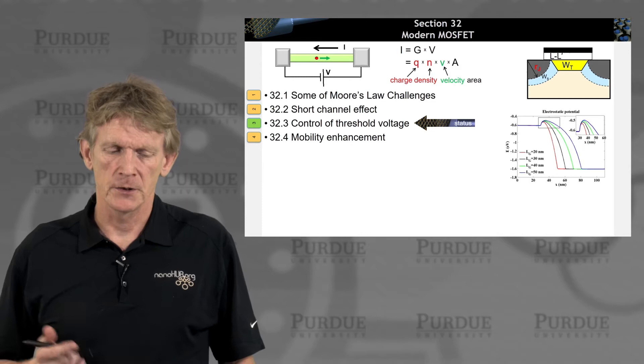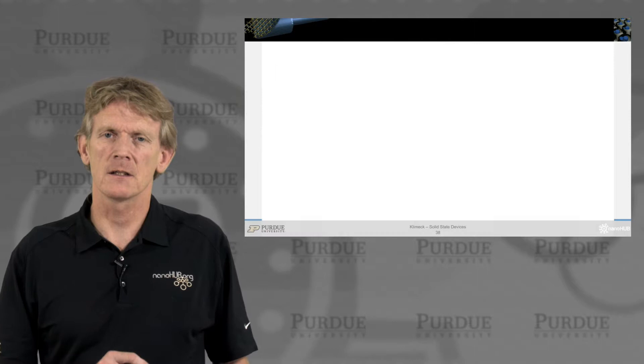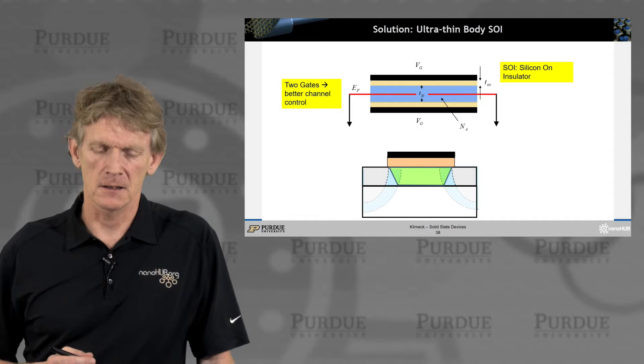Let's talk about the control of the threshold voltage a little bit more. We just talked about short channel effects and showed that there can be a threshold voltage roll-off. That would be bad and decrease device performance. So let's see how much control you can get.